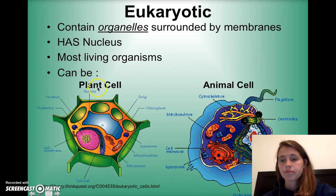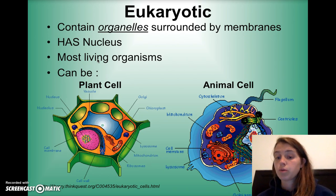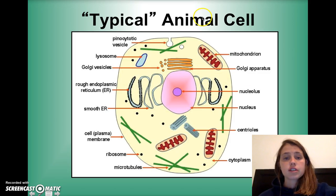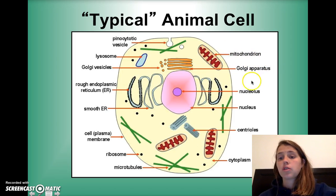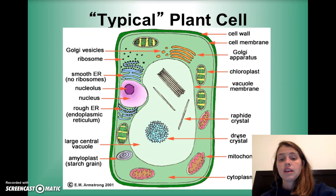A eukaryotic cell contains organelles, or small organs. They do have a nucleus, or a brain, which is essentially responsible for the function of the cell. It can either be a plant cell or an animal cell. Your typical animal cell has lots of organelles like the mitochondrion, Golgi apparatus, nucleolus, and nucleus — lots of long words we'll keep working on.